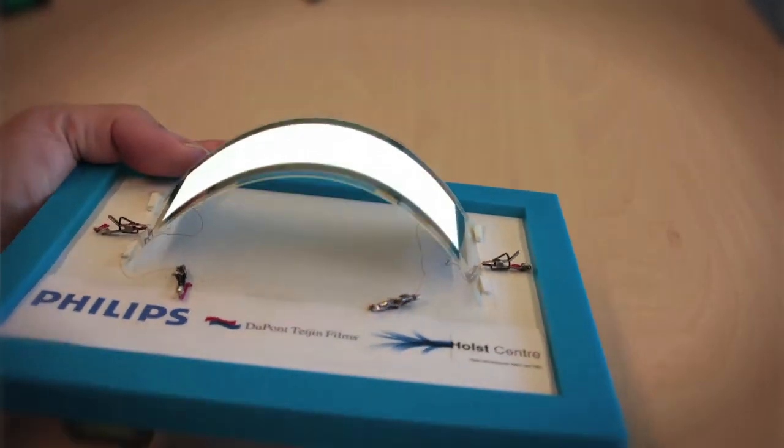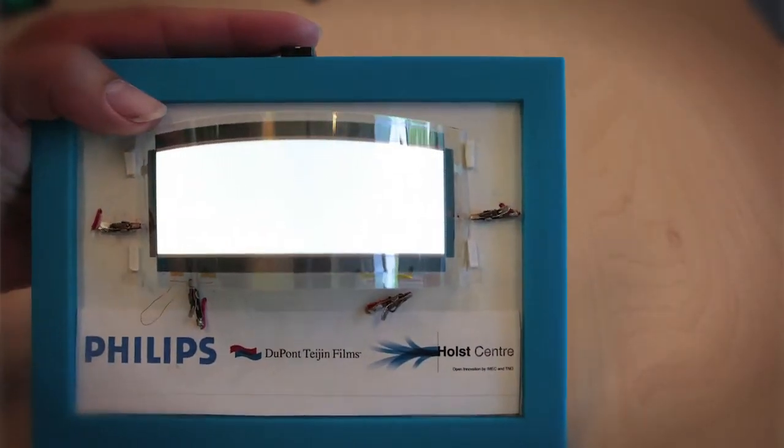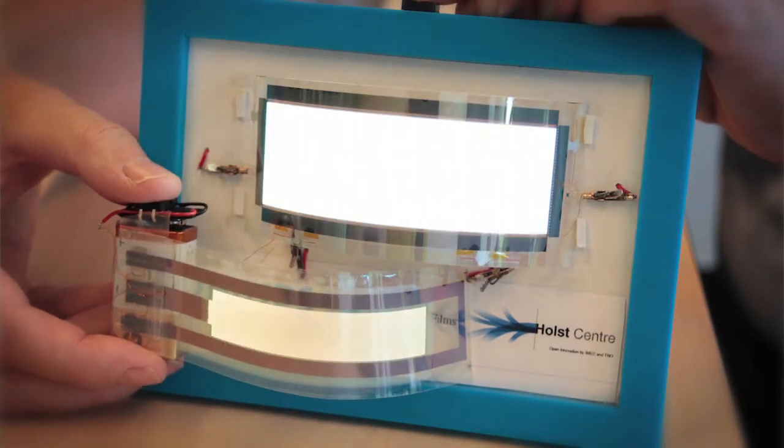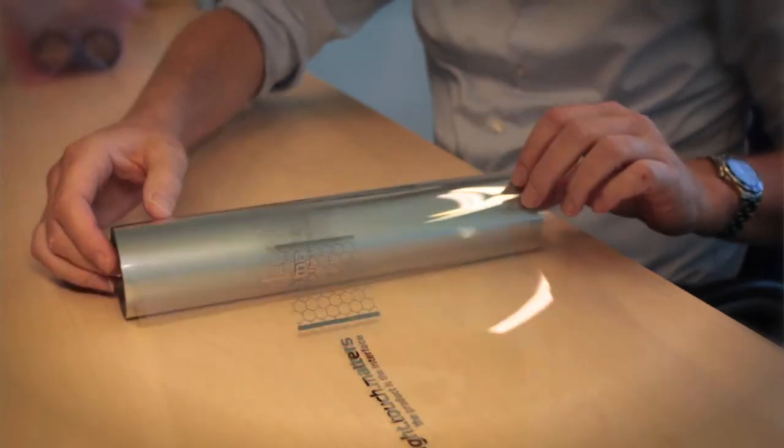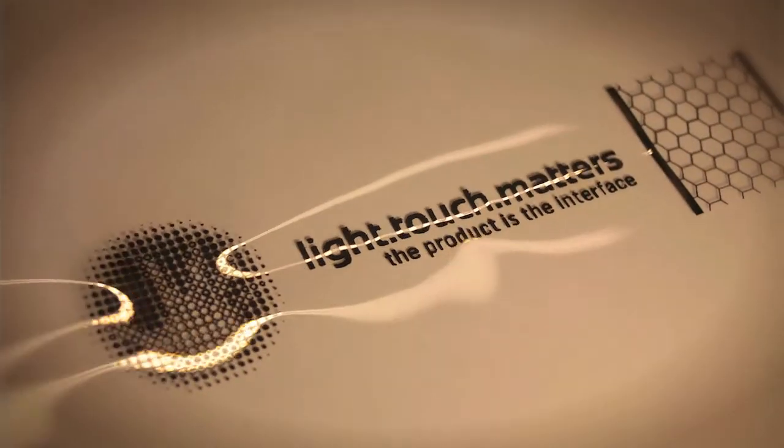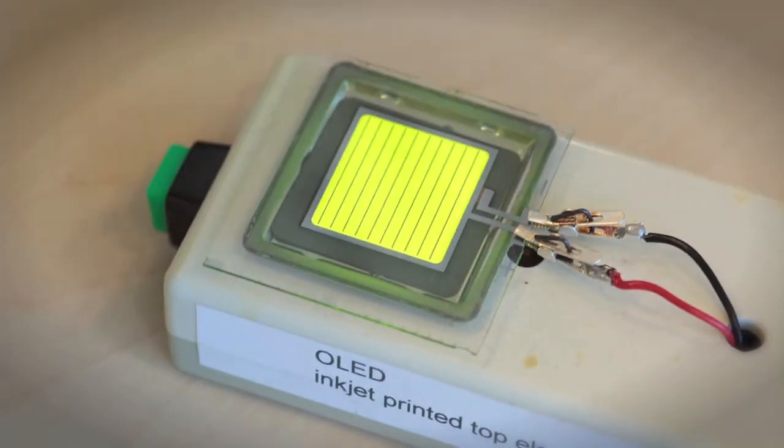If you want large area you need to accept less homogeneous light output. If you want a very bright OLED then you should definitely forget mechanical flexibility. If you want to have very good mechanical flexibility you should accept lower device efficiency, lower maximum brightness and also a restricted choice of colors.